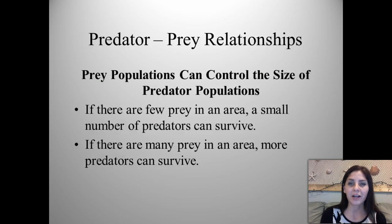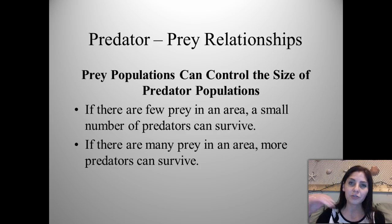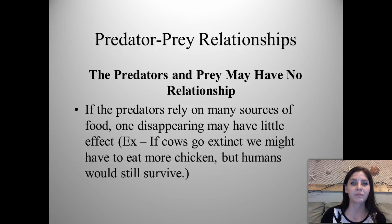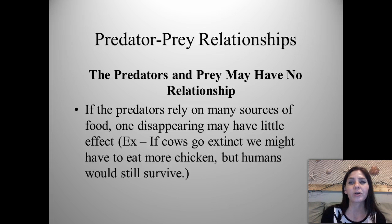In predator-prey relationships, it helps to control population size. If there are few prey in the area, a small number of predators can survive, whereas a large amount of prey will support a larger predator population — they basically fluctuate. When there are a lot of prey animals, the predator population starts to increase; as prey decrease, predator numbers decrease as well. If predators rely on many sources of food, one disappearing may have little effect — for example, if cows went extinct, we'd eat more chicken but the human race would still survive.